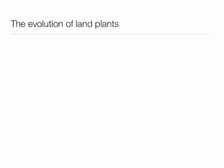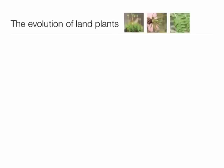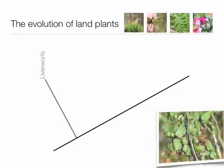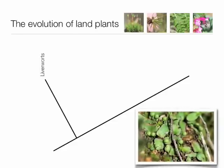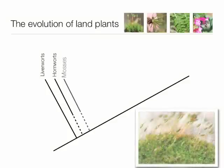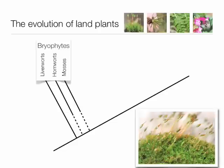So where do bryophytes fit in terms of their evolutionary relationships with other land plants? They are true plants and share a common ancestor with other land plants. We have liverworts coming off first, followed by hornworts, and finally mosses. So they are some of the earliest forms of land plants, with a gametophyte-dominant life cycle and a lack of specialized conductive tissue.